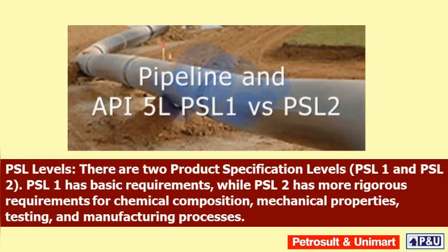PSL levels: There are two product specification levels, PSL 1 and PSL 2. PSL 1 has basic requirements, while PSL 2 has more rigorous requirements for chemical composition, mechanical properties, testing, and manufacturing processes.